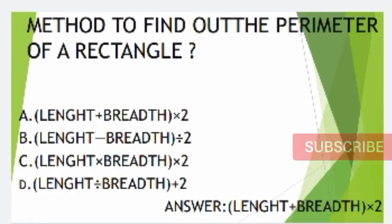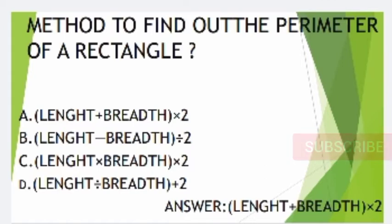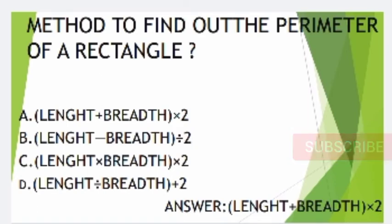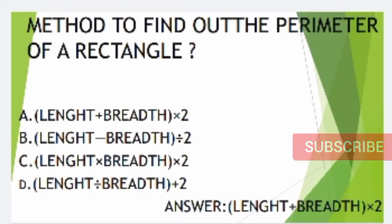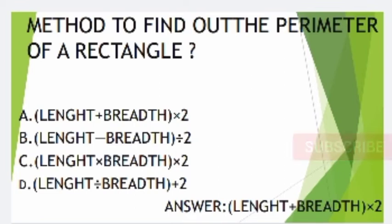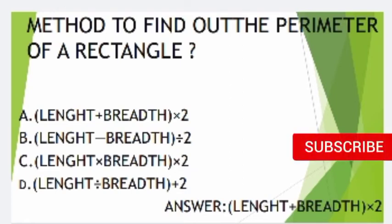Fifth question: What is the method to find out the perimeter of a rectangle? Options are given. Option A: length plus breadth into 2.